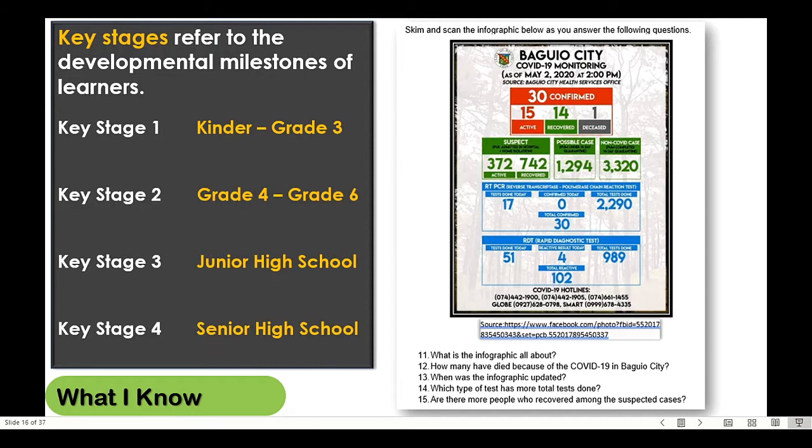Therefore, key stage 1 shall have 5 test items, key stage 2 10 test items, key stage 3 15 test items, and key stage 4 15 test items as well. Since my learning module is intended for grade 7 learners, then there are 15 test items for my pre-test.